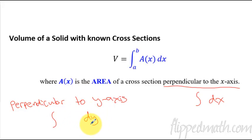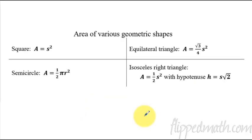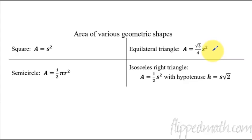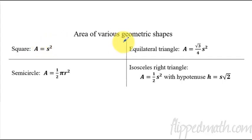We will do both of those in the lesson today. These are the main shapes we're going to work with for our lesson and on your practice. On the AP exam, if they give you a different type of object, they will give you the formulas — you're not expected to memorize things like the equilateral triangle formula. A square you should know: the area of a square is just one side squared.